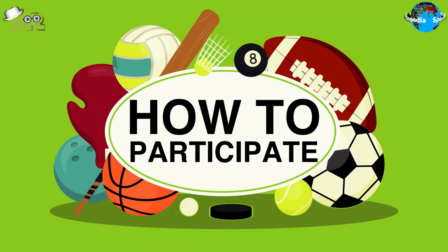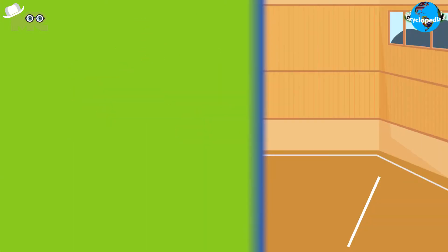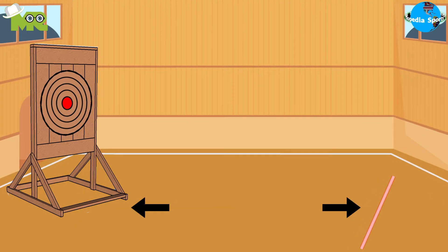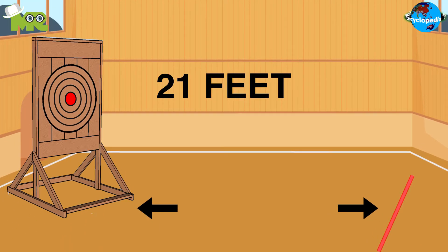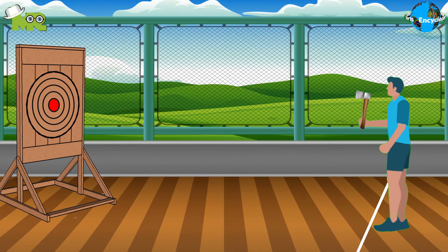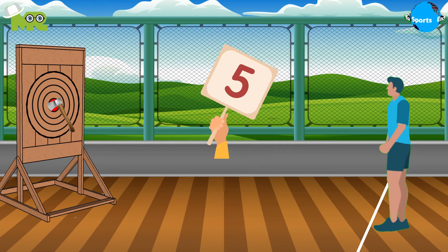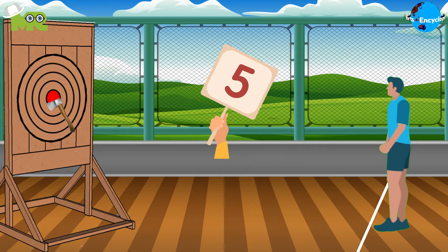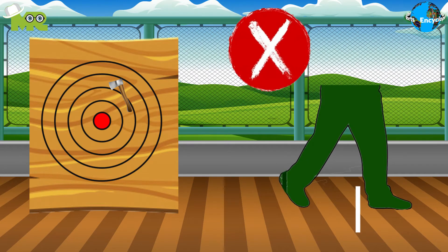Now let's talk about how to participate in axe throwing. The distance between the throwing line and the target is either 21 feet or ranges between 15 to 30 feet. Participants are awarded points for each throw based on where the axe falls on the target board. It's not allowed for the thrower to step past the target line before the axe makes contact with the target.